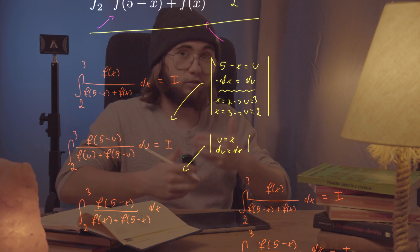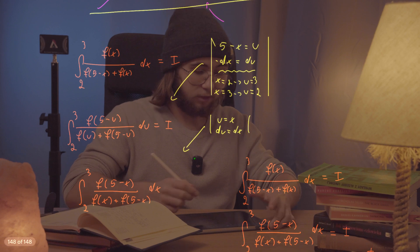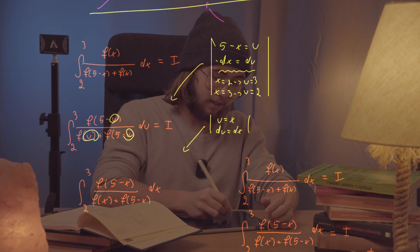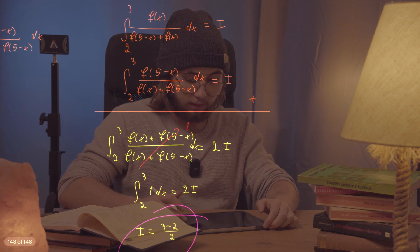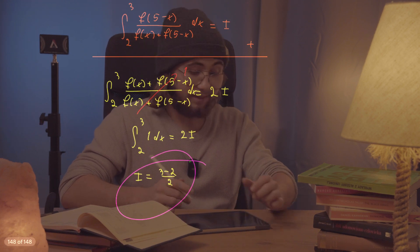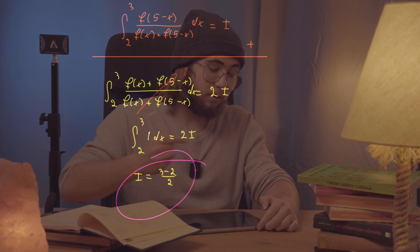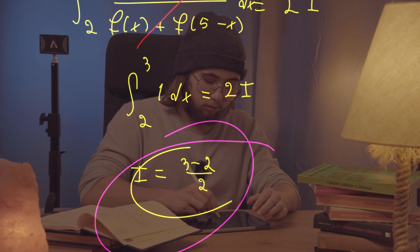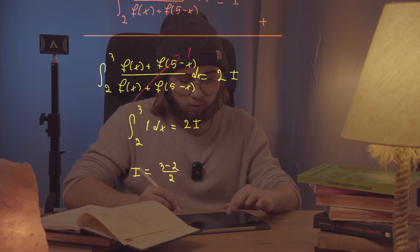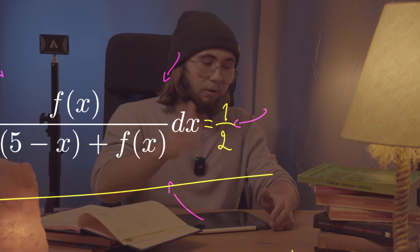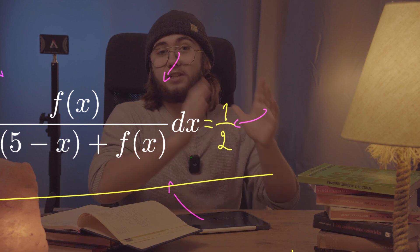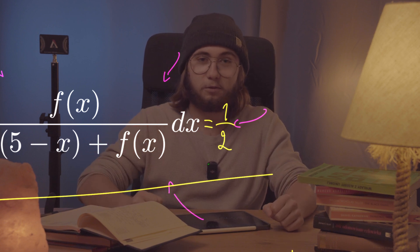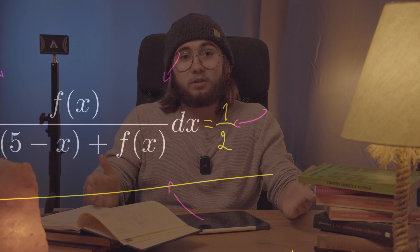So to summarize: we introduced a u-substitution with five minus x equal to u, noticed that the denominators after the substitution were the same, changed u back to x, added the two integrals together, and found that the numerator and denominator cancelled nicely. Our desired integral equals three minus two over two, which is one half. I hope you enjoyed this video — like and subscribe, I post very frequently, sometimes even twice a day. Thanks for watching, see you in the next one!